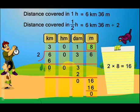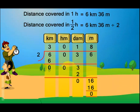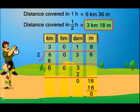So what can we say now? We can say that Mohit ran a distance of 3 kilometers 18 meters in half an hour. And by solving this question, we also learned how to perform division in metric systems.